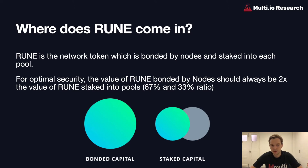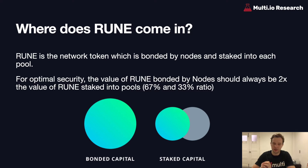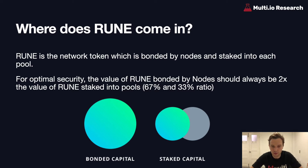RUNE is the network token which needs to be bonded by the nodes as well as staked into each of the asset pools. For optimal security, the value of RUNE bonded by the nodes should always be twice the value of RUNE staked into the liquidity pools. The logic here is that the reward from compromising the network needs to be smaller than the investment required to compromise the network.